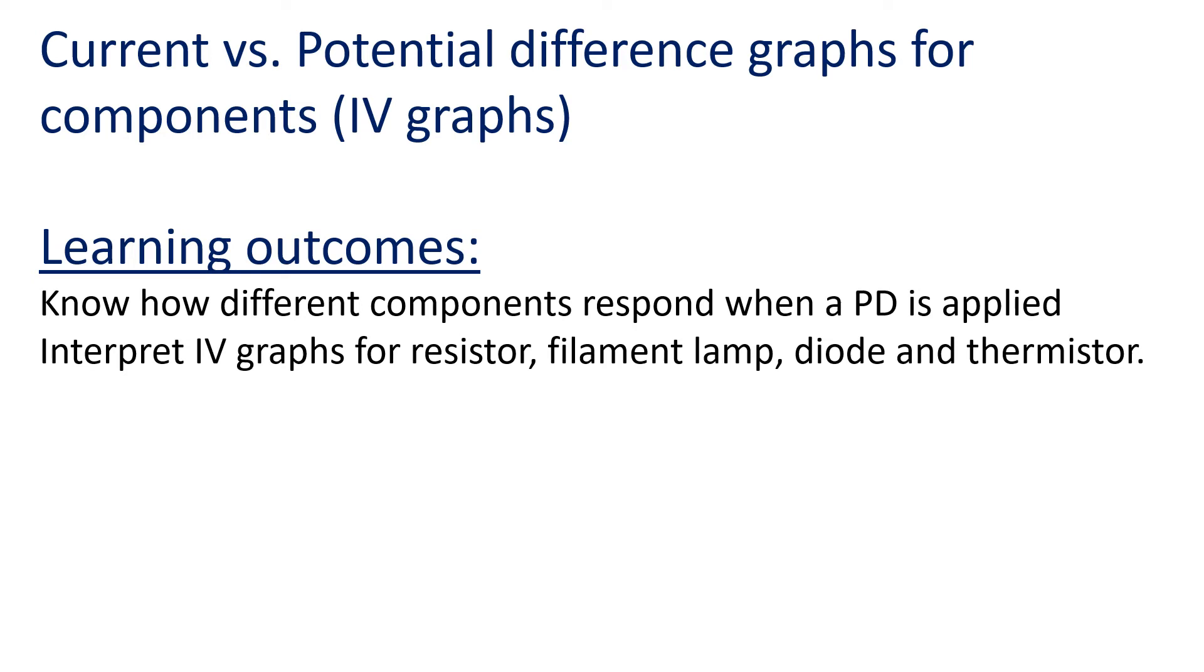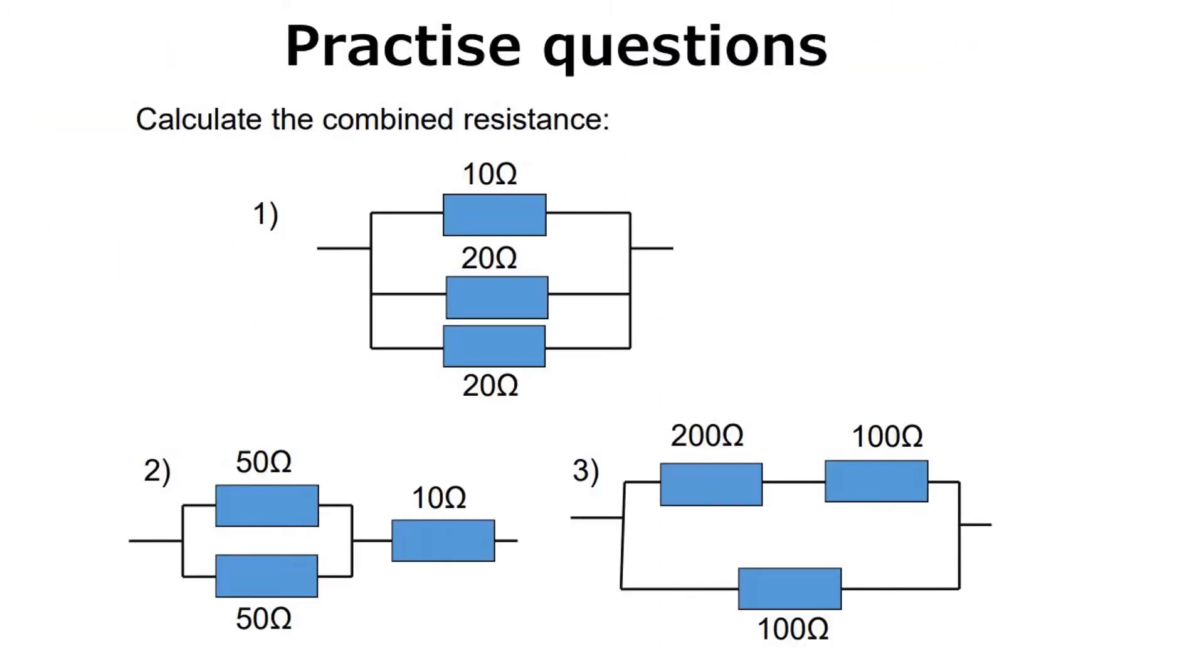Hello everyone, this lesson is about current versus potential difference graphs for components, sometimes called IV graphs or IV characteristics. Learning outcomes: know how different components respond when a potential difference is applied, interpret IV graphs for resistor, filament lamp, diode and thermistor.